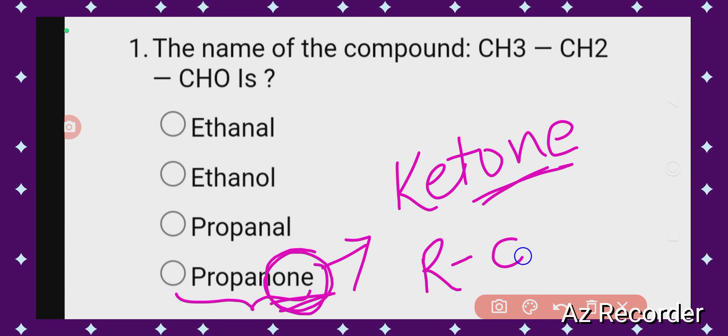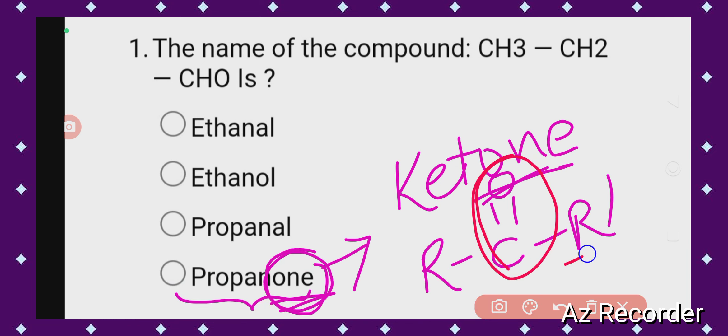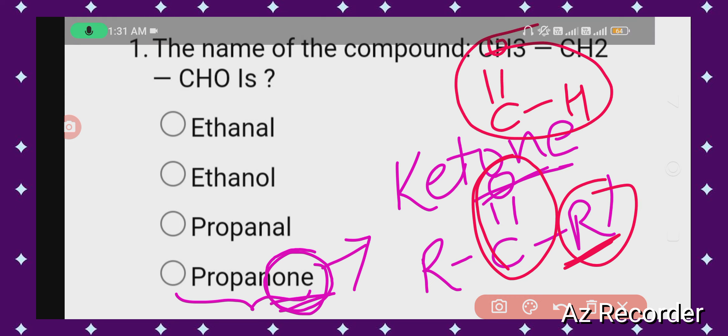What is ketone? R-C=O-R'. But if instead of R', we have C=O-H (CHO group), just like here, then we use aldehyde. So option C will be the correct option and the name of this compound will be propanal.